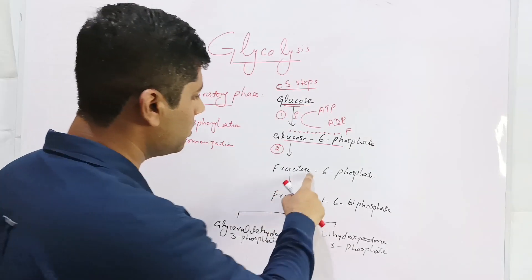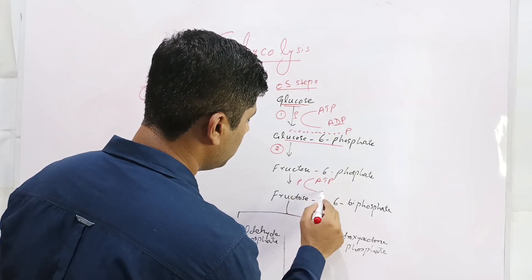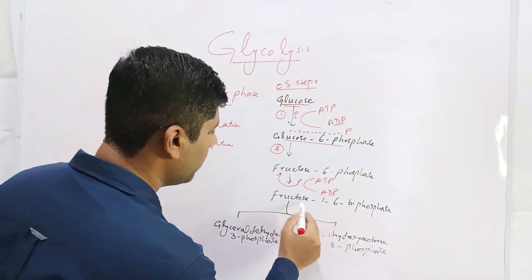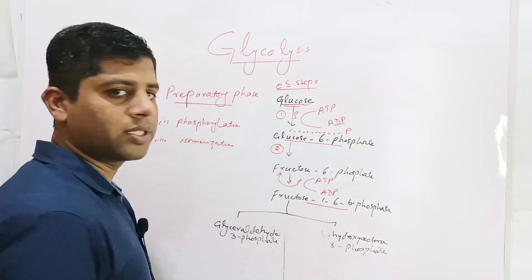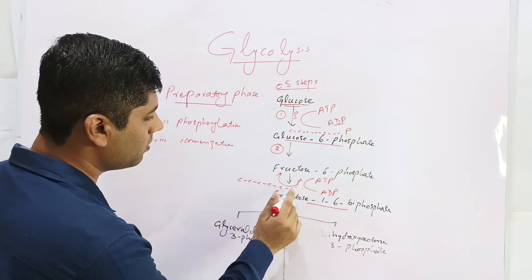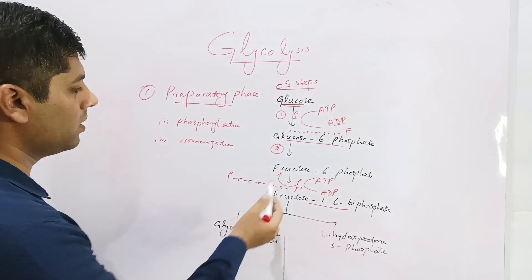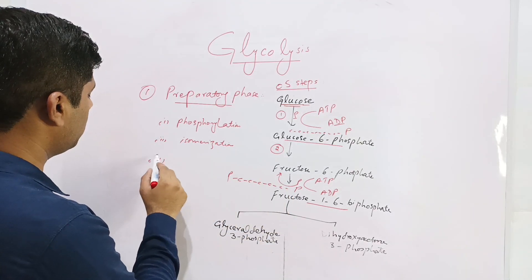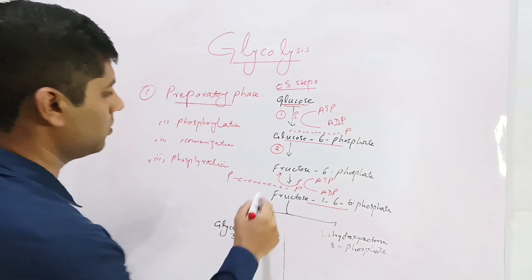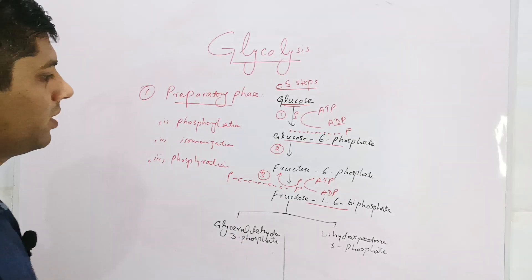In the third step, fructose-6-phosphate obtains another phosphate from a second ATP molecule, leaving behind ADP. This phosphate enters carbon number one of fructose, constituting fructose-1,6-bisphosphate — carbon number six already had a phosphate group, and now carbon number one has also gained one. This step is again phosphorylation, since a phosphate group is attached to the fructose molecule.